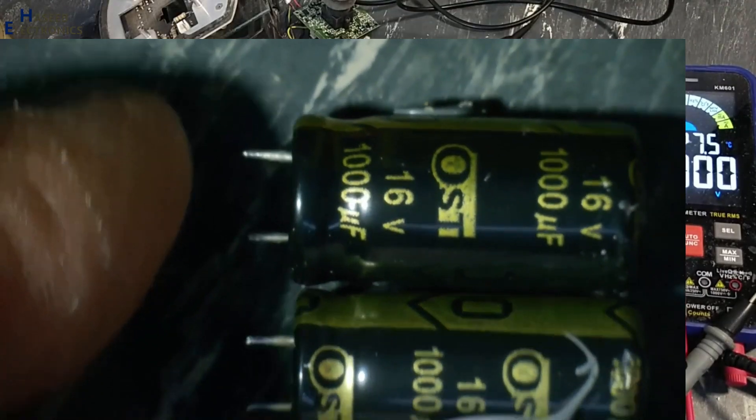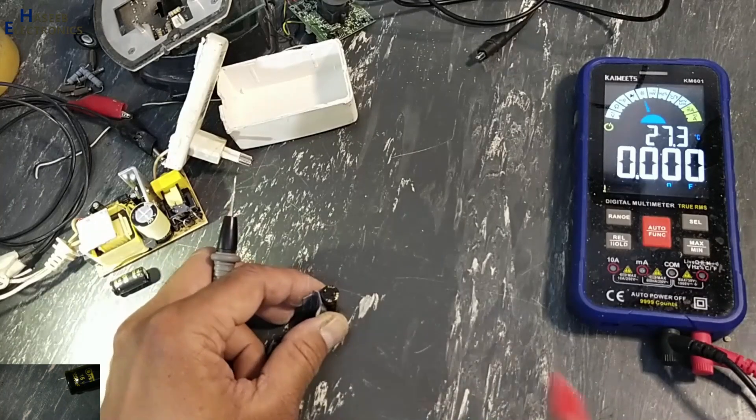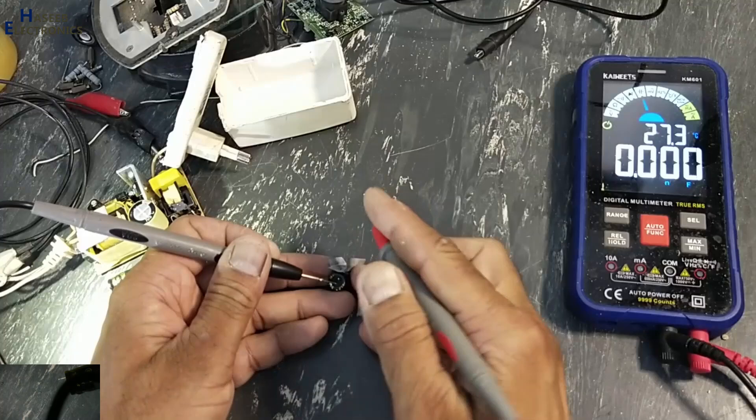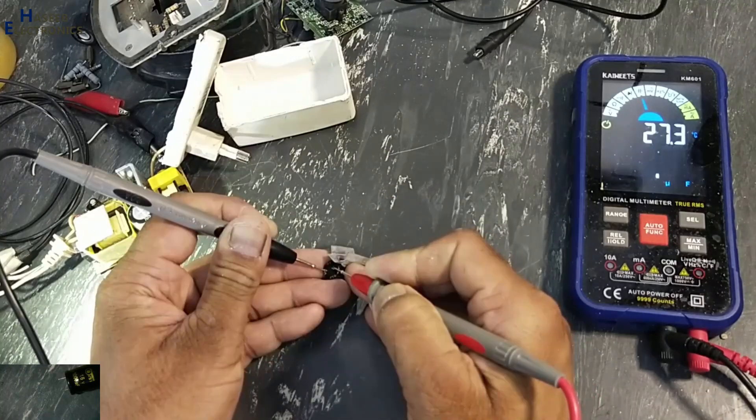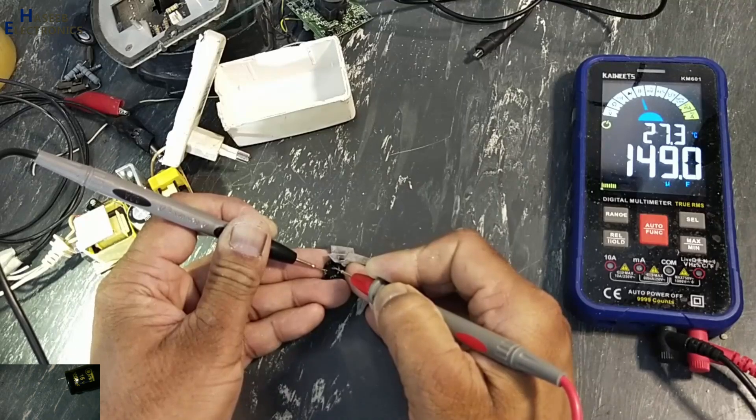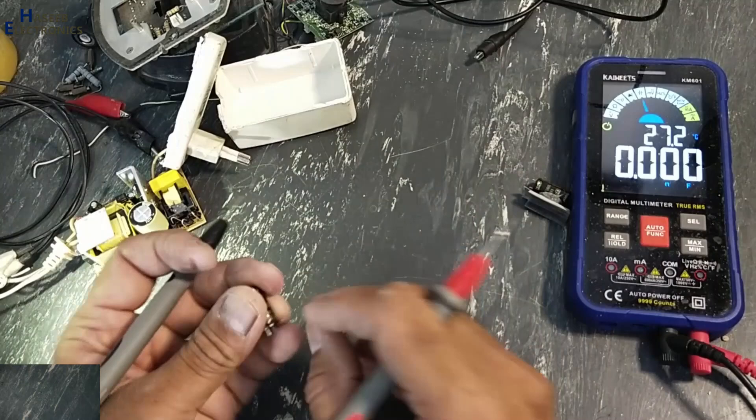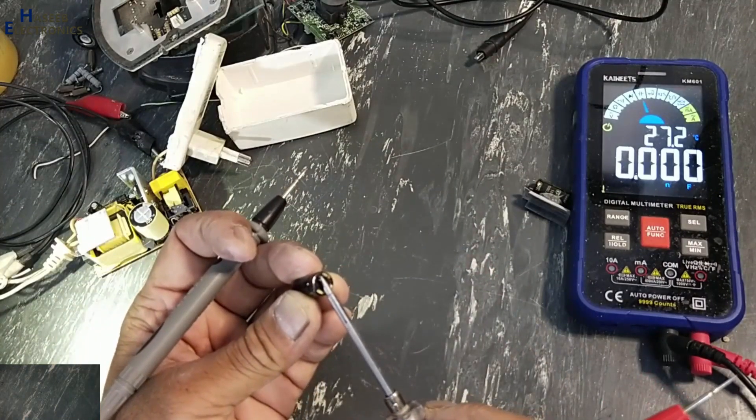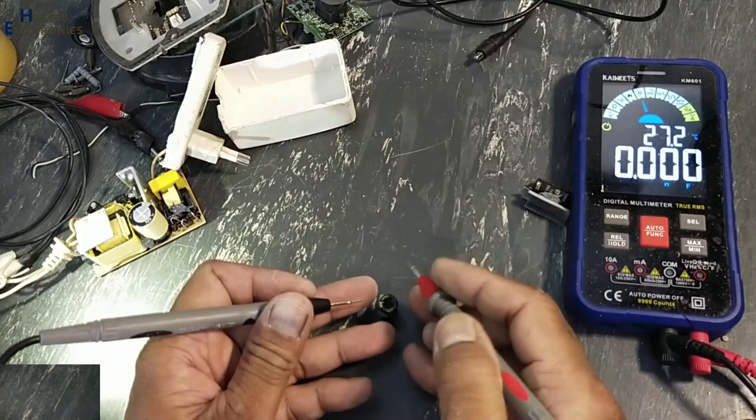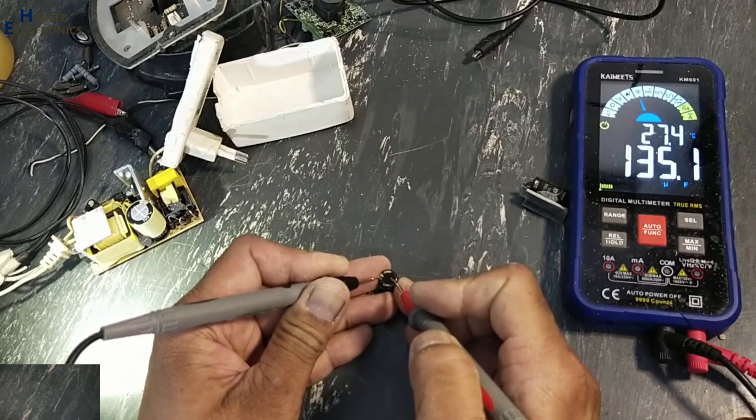1,000 microfarad, 16 volts. 150 microfarad instead of 1,000. This capacitor is damaged. It is also 135 micro.